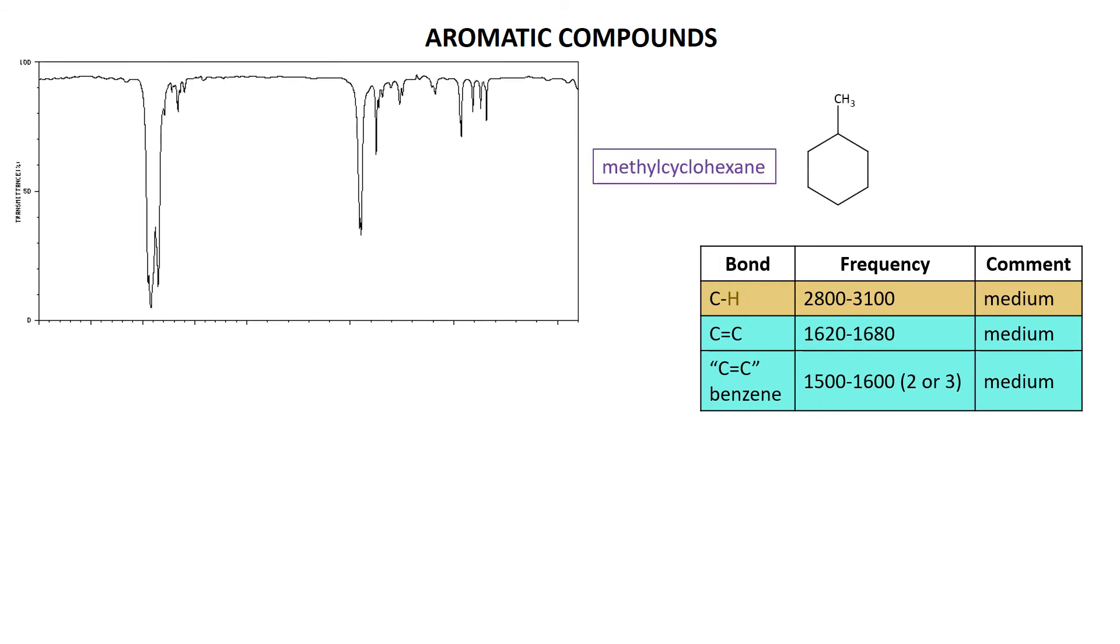So if I just compare a couple, methylcyclohexane, so very boring kind of spectrum here, right? Essentially you've got CH bonds, you have the CH stretches, the CH bends, and then various other bits down here associated with carbon-carbon single bonds.